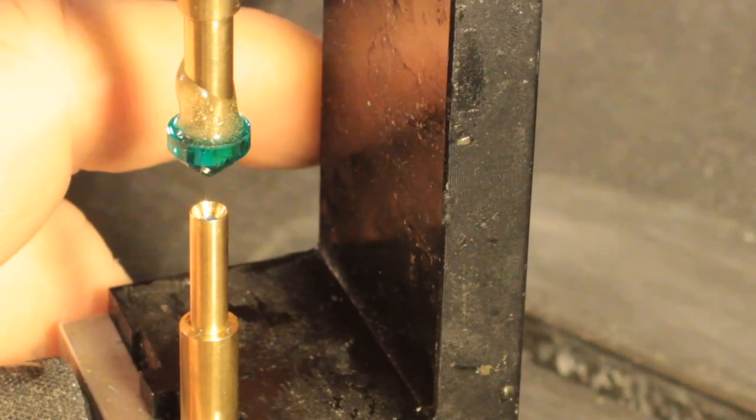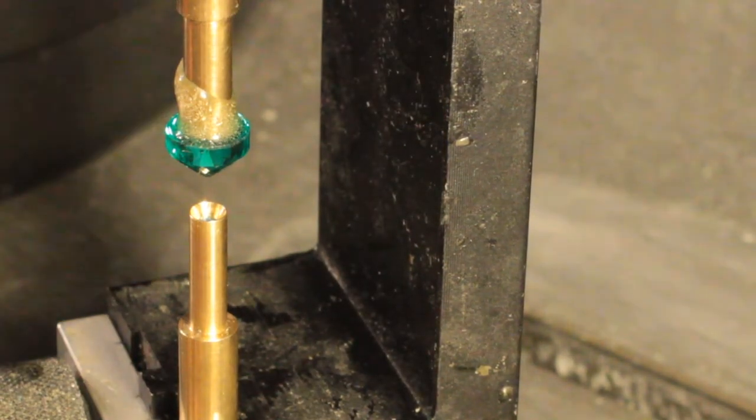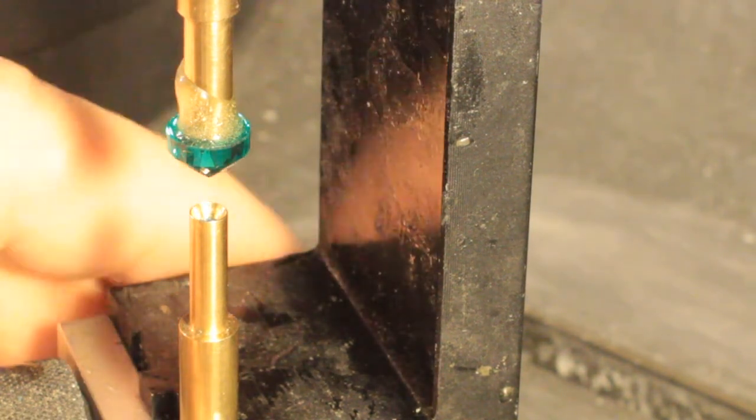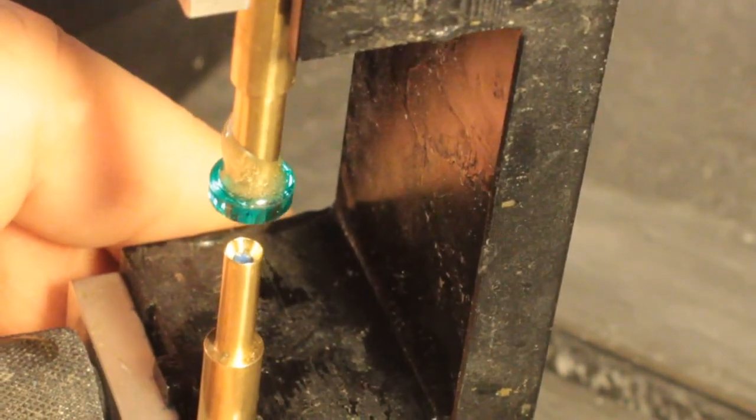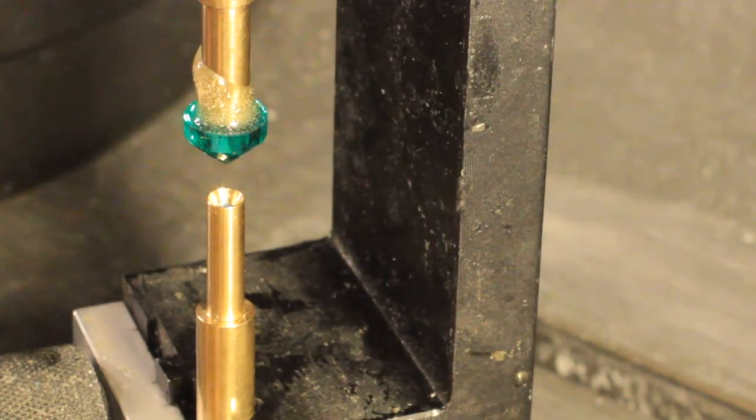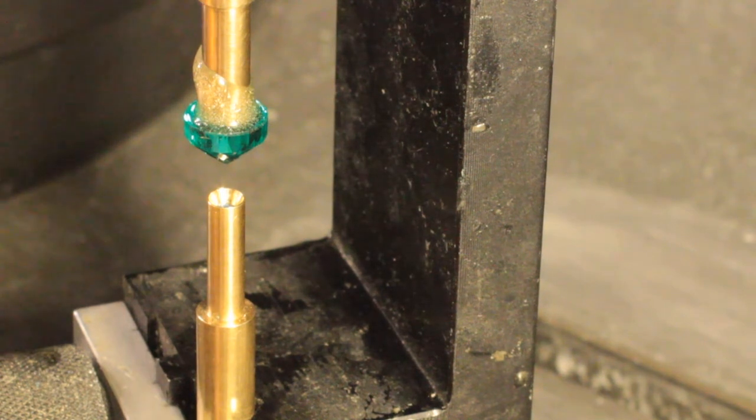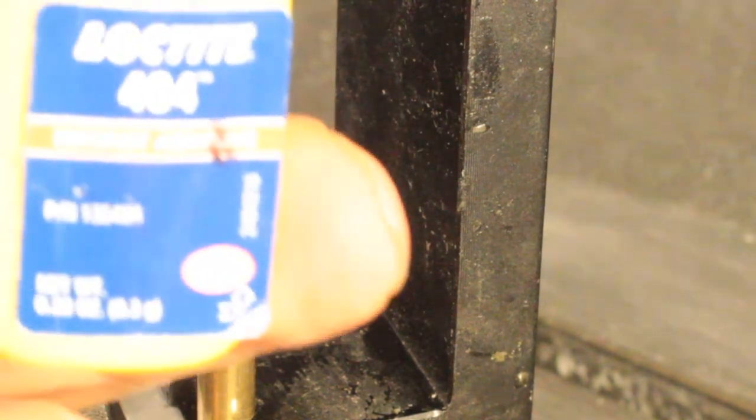So I'm ready to transfer our emerald. You can see in the bottom of the dop, I've put a little bit of blue modeling clay to help protect the culet. In this case, I'm going to use super glue. I use the Loctite 404. Keep it in the fridge and discard it after one year.